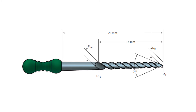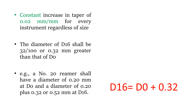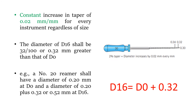There is a constant increase in taper of 0.02 mm per millimeter for every instrument regardless of size. A 2% taper means the diameter increases by 0.02 mm every millimeter. So for a number 30 file, the tip diameter D0 is 0.30 mm; at D1 it is 0.32 mm; at D2 it is 0.34 mm; at D3 it is 0.36 mm, and so on up to D16.